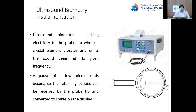Looking at the instrumentation, ultrasound biometers come in different sizes and shapes. The console is a box with electronics inside and a printer, with a display that may be a touchscreen or normal display with buttons. The biometer supplies pulsing electricity to the probe tip, where a crystal element vibrates and emits a sound beam of 10 megahertz. A pause of a few microseconds occurs so that the returning echoes can be received and converted to spikes on the display.